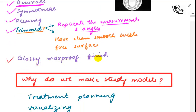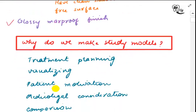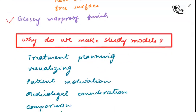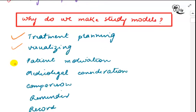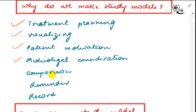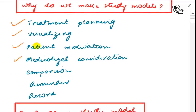We make study models for several reasons: for treatment planning, for visualizing, and for patient motivation — we can make certain changes in the study model and show the patient what their dentition will look like in the near future. They are also used for medico-legal consideration, because the study model is a permanent record of the intermaxillary relationship and occlusion at the start of therapy.